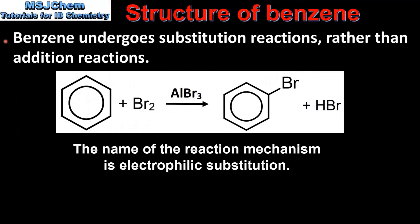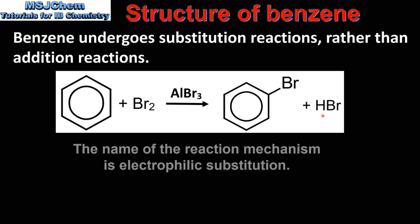The next piece of chemical evidence is the type of reactions that benzene undergoes. Benzene undergoes substitution reactions rather than addition reactions. Here we can see a substitution reaction of benzene with bromine to produce bromobenzene and hydrogen bromide.